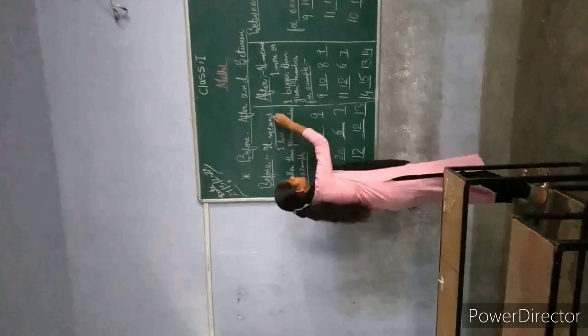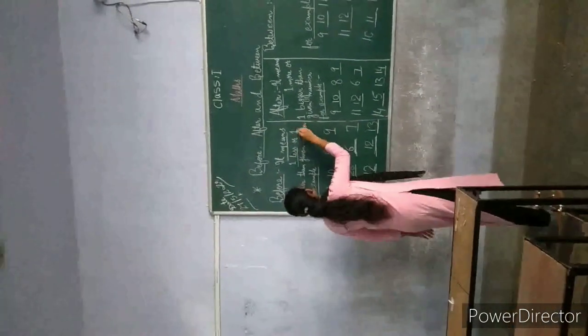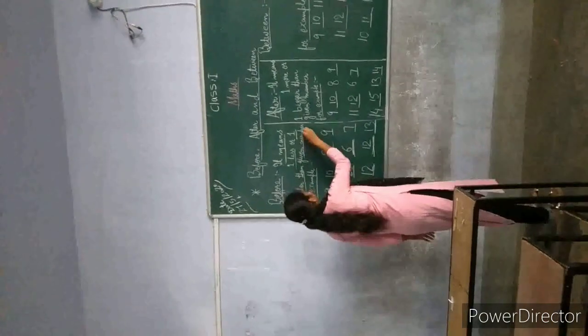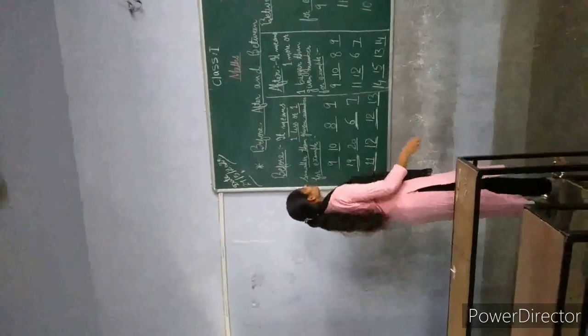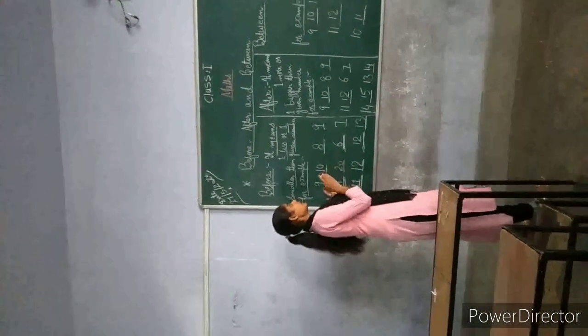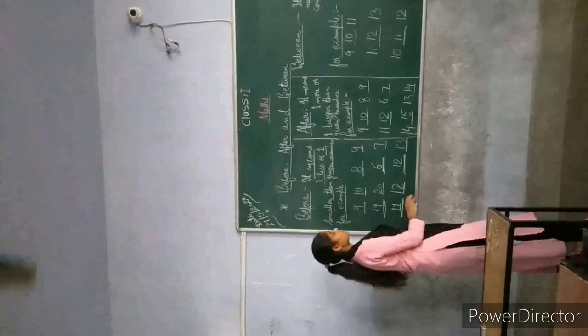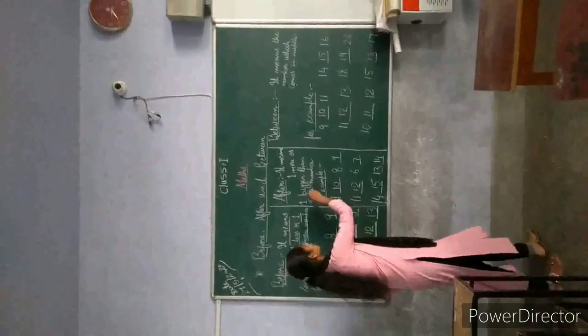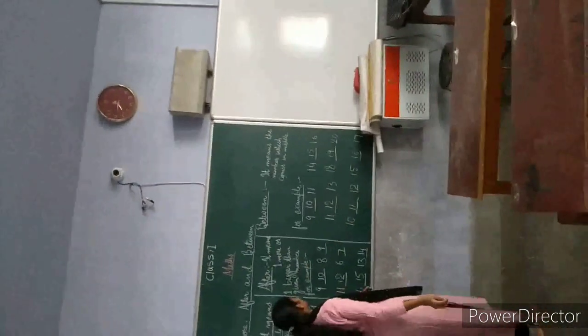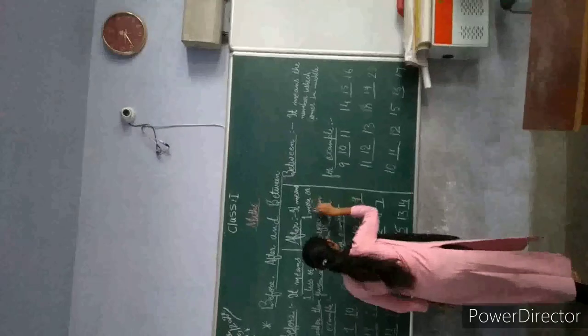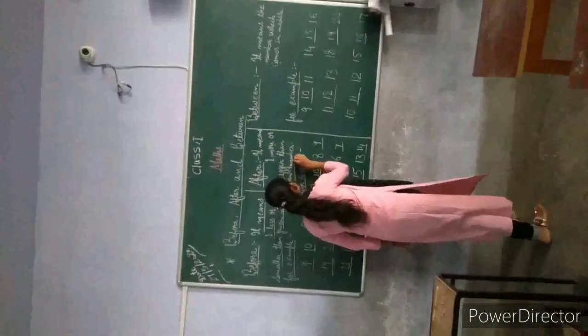This means one less or one smaller than the number. The number which means one small and one small number is before. Then after this, the number which means one more and one bigger than the number.